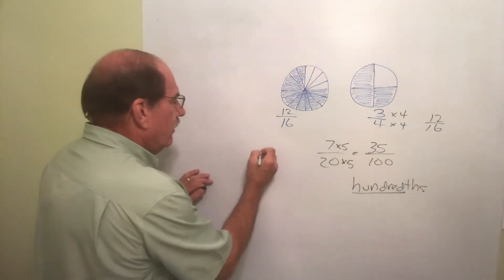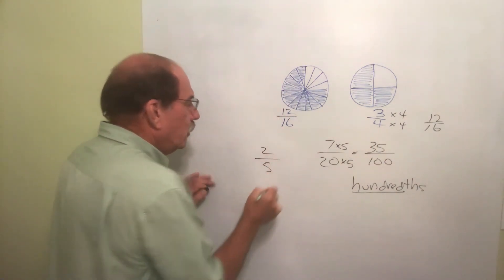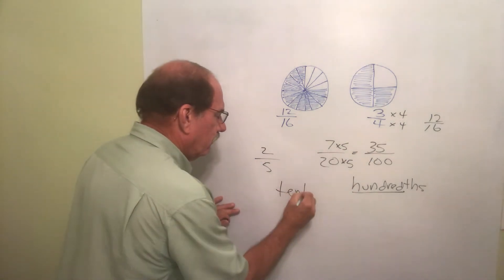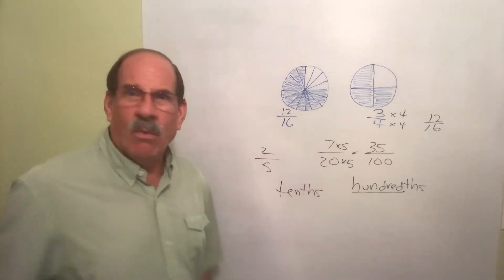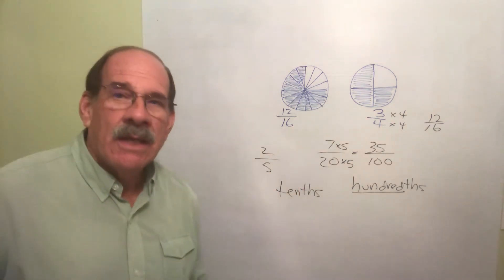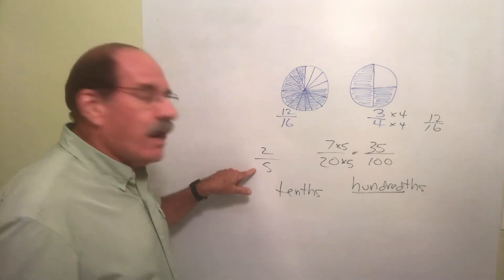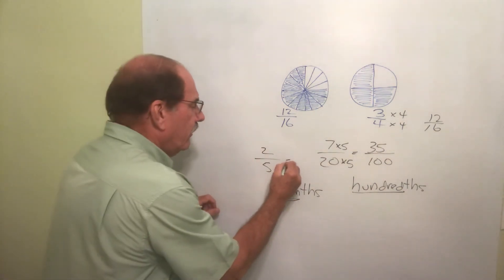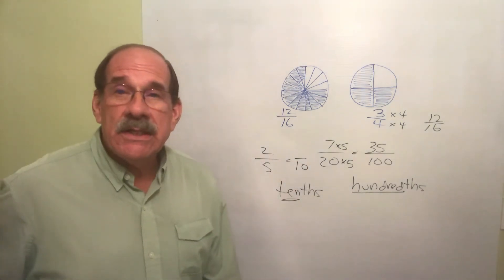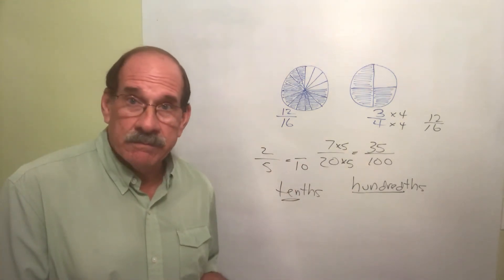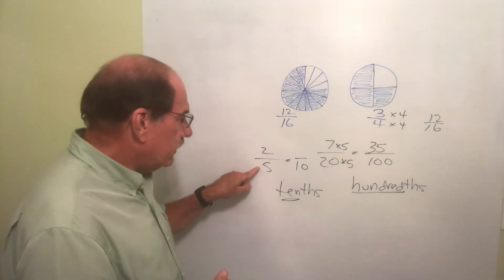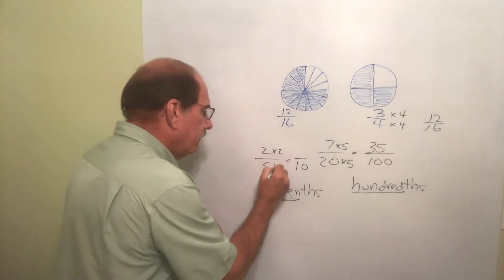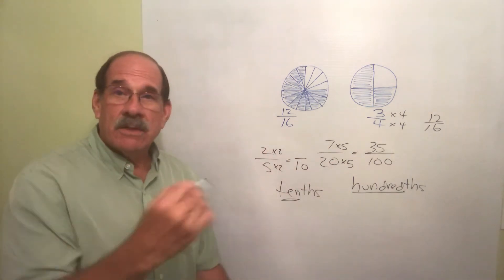Let's say we have the number two-fifths and I want to enlarge that into a number expressed in tenths. What does that mean? It means I enlarge it so the denominator is the number 10. Well, what do I do to a five to change it into a 10? I multiply by two. If I multiply this by two, it becomes a 10. I multiply this by two and it becomes four. Four tenths.